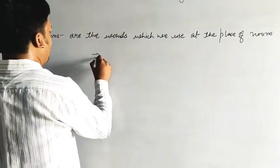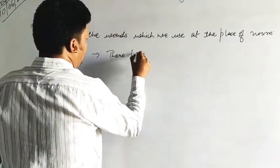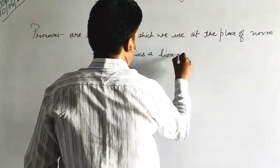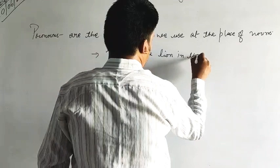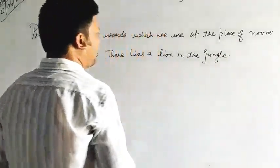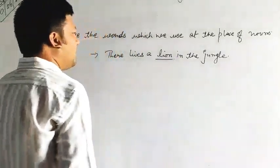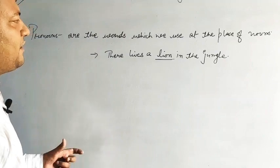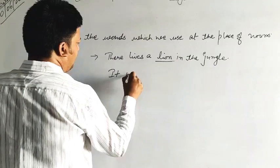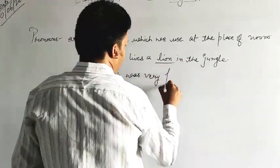Pronouns are the words which we use at the place of nouns. Let me give you an example. Suppose here I write: there lives a lion in the jungle. So here if I see, then lion is a noun here. Now if I write one more sentence related to this.